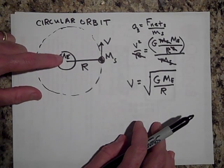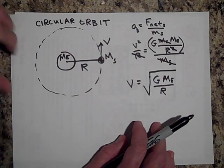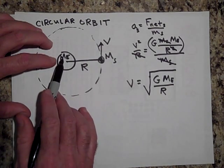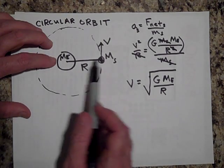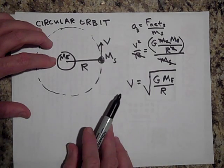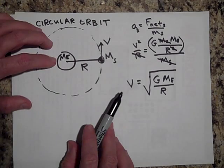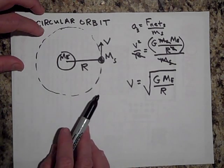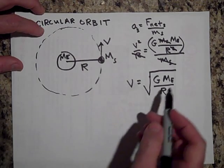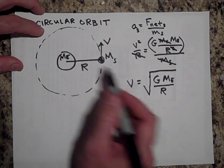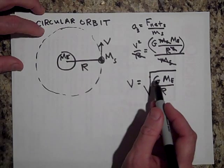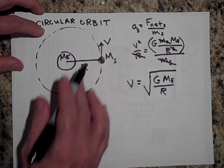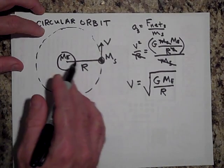What if instead of Earth, we had a planet that's four times more massive? How fast would the satellite have to go? It would have to be faster, because the stronger gravitational pull would require higher speed to avoid falling in. If you put four times the Earth's mass under the radical, you can pull out a factor of two, so the new velocity is twice the original.